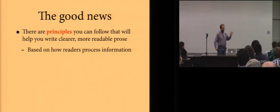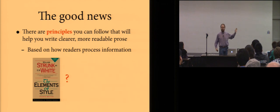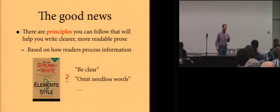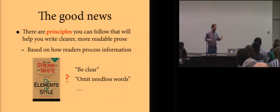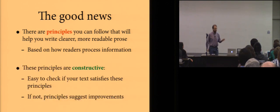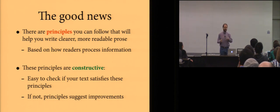So the good news is there are principles you can follow that will help you bridge this chasm, that will help you write clearer, more readable prose, based on having an understanding of how readers process information. And that's what I'm going to tell you about today. When people think principles of good writing, a lot of people think Strunk and White, The Elements of Style. Personally, I really hate this book. The thing I don't like is that some of the key advice from this book, some of the most famous advice, is so vague and so abstract that it's just not useful. Things like be clear and omit needless words.